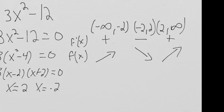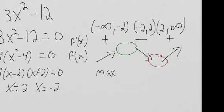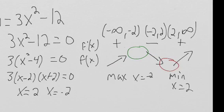What we see is that f(x) goes from increasing to decreasing — that's a max — and then from decreasing to increasing — that's a min. So we have a max at x = -2 and a min at x = 2. We found those by checking whether the derivative is positive or negative on each interval: positive to negative means increasing to decreasing, which means a maximum.